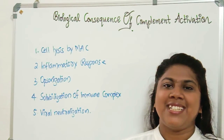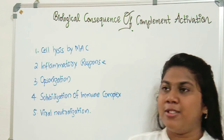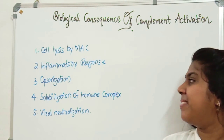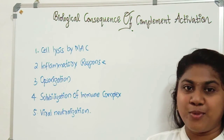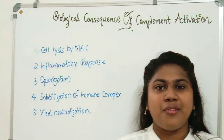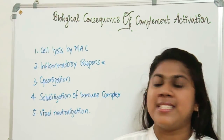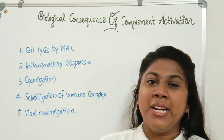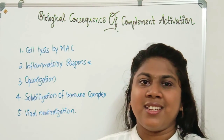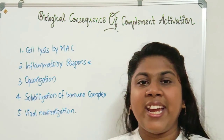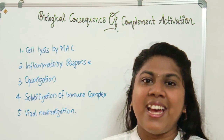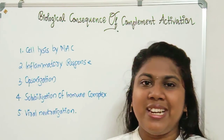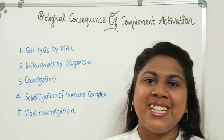In this video, we discussed the five major biological consequences of complement activation: cell lysis by MAC, inflammatory response, opsonization, solubilization of immune complex, and viral neutralization. Hope you understood this video. If you liked it, don't forget to like and subscribe to this channel for more biology-related topics. Thank you.